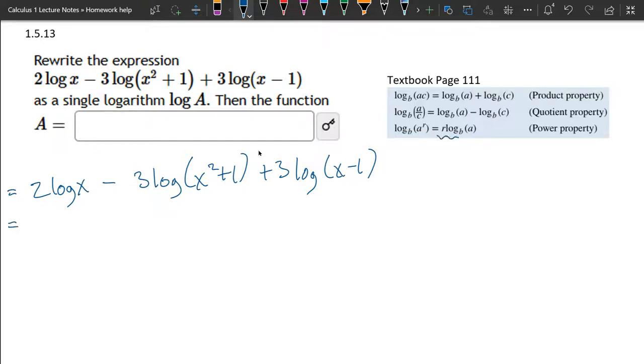So we're going to start with the power property. The number r times log, now there's no base on these. There's an invisible base 10 on all these, and we don't need to write that. But a good way to think about this, this r coefficient becomes an exponent right there. And you can see it, a to the r right there. So our first one is log of, this 2 becomes an exponent, log of x squared. All right.